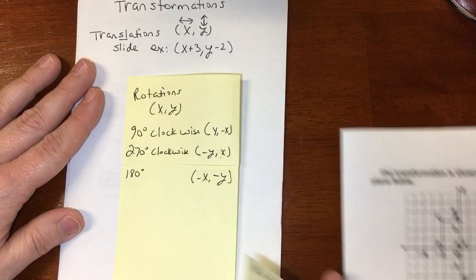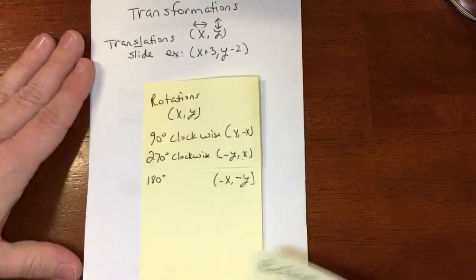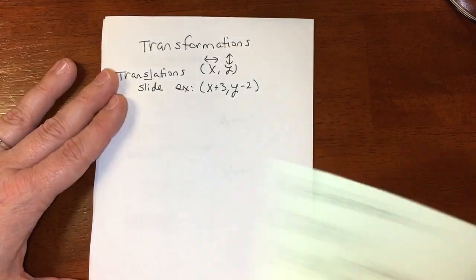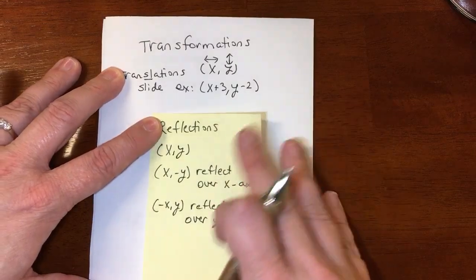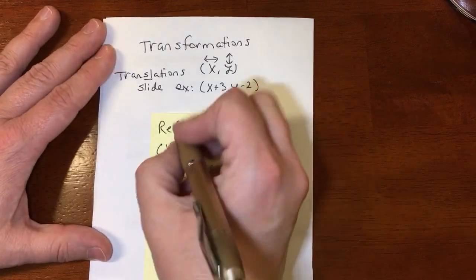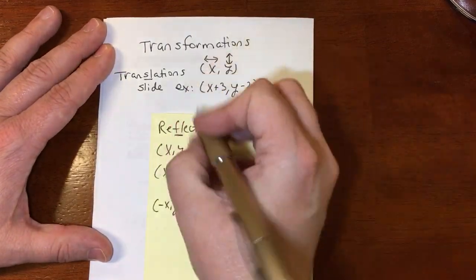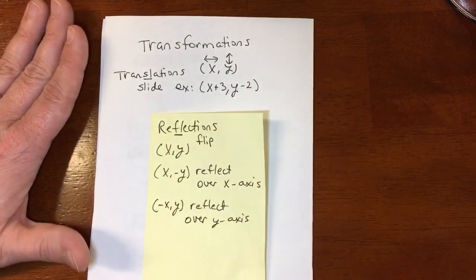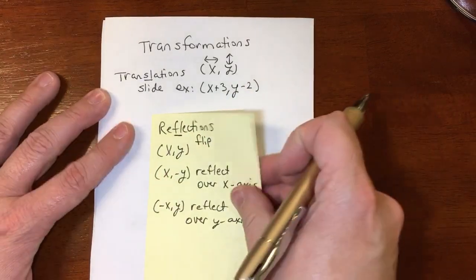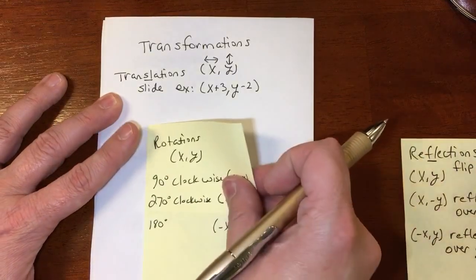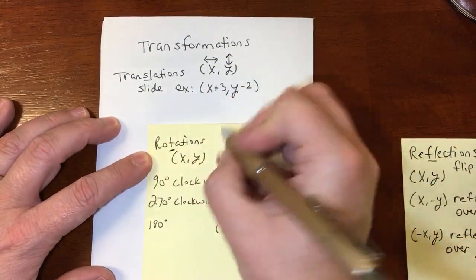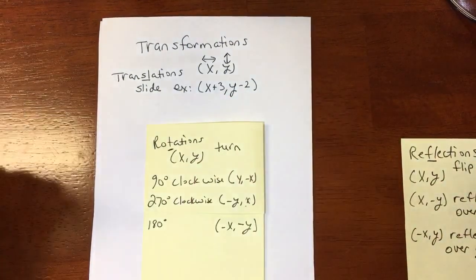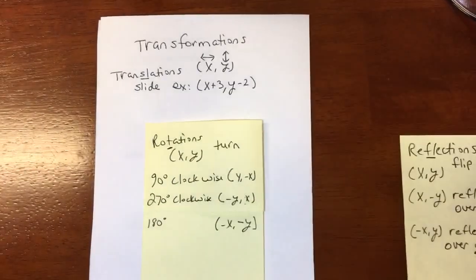Alright, for the transformations, reflections are the ones that flip - that F-L is for flip. And rotations turn - that T is for turn. Alright, thank you so much.